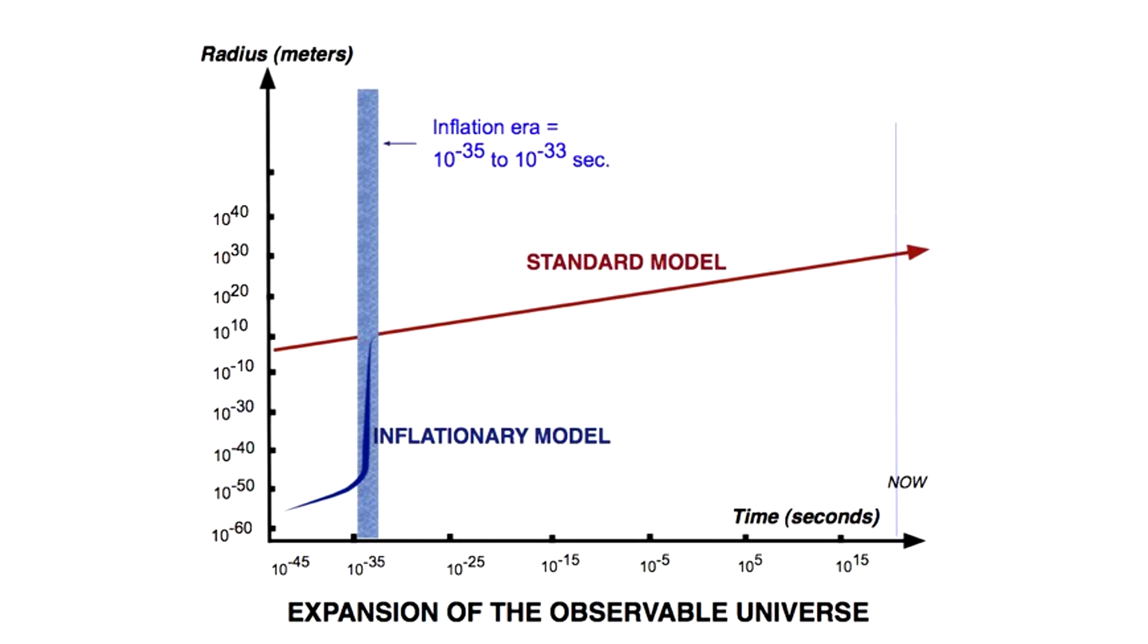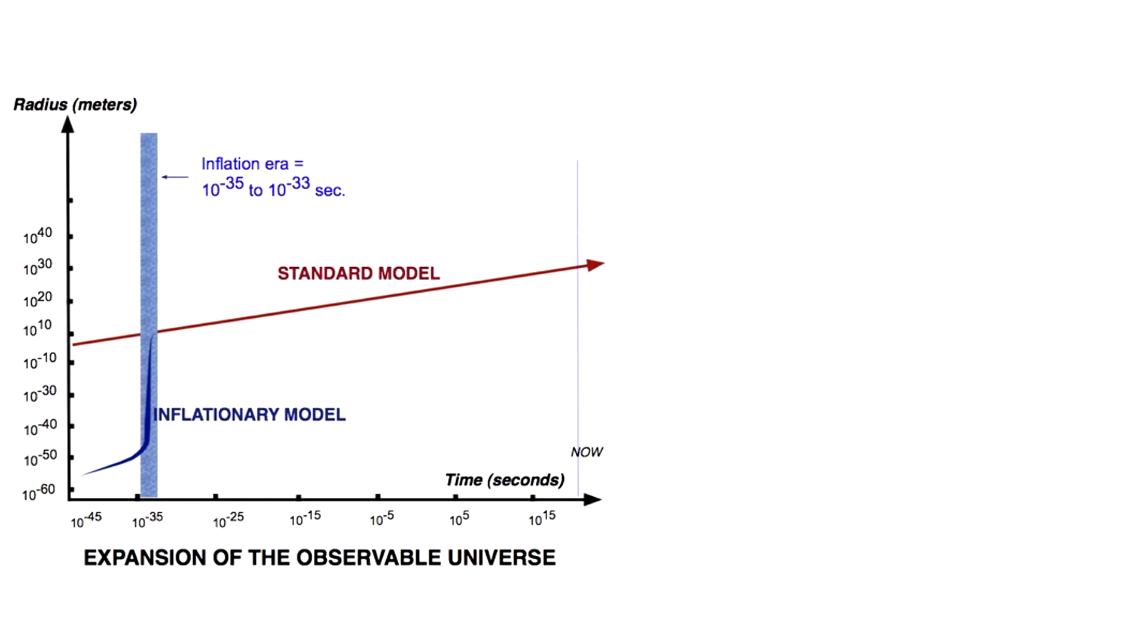But cosmic inflation allegedly started 10 to the minus 36 seconds after the Big Bang and then stopped between 10 to the minus 33 and 10 to the minus 32 seconds later. The universe expanded 10 to the power 78 times in volume. How and why it started and smoothly stopped are unknowns.